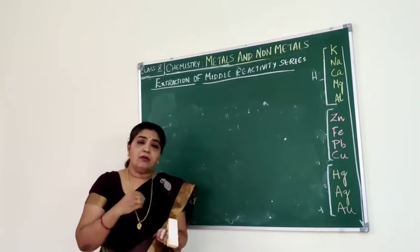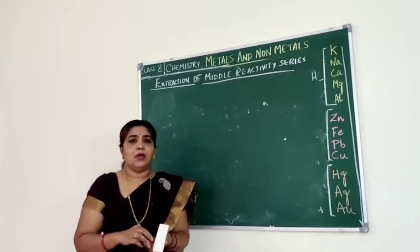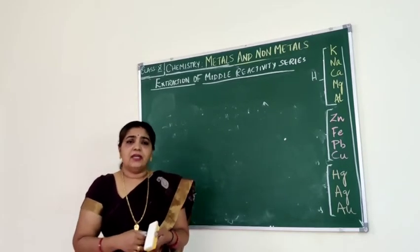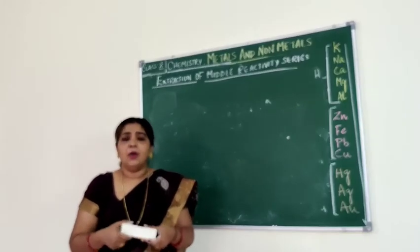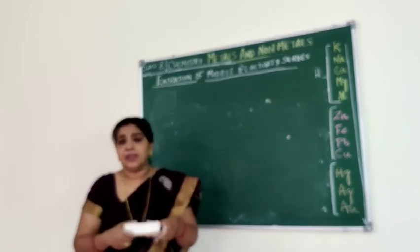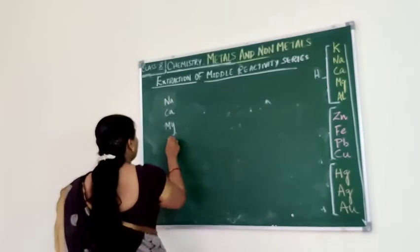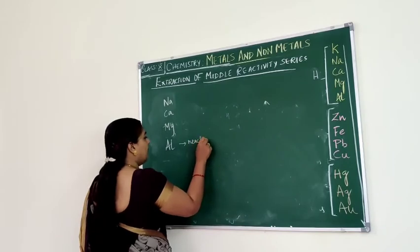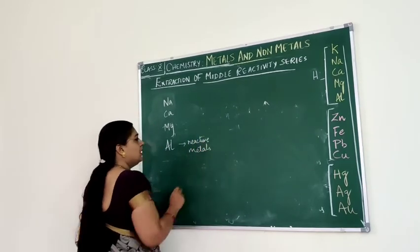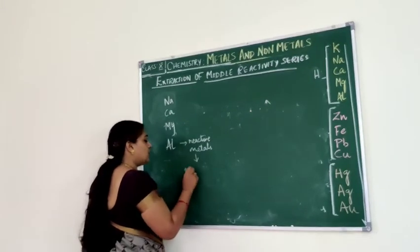Now, is carbon always used as the reducing agent? No, carbon need not always be used. Besides carbon, metals from the high reactivity series can also be used as reducing agents — for example, sodium, calcium, magnesium, and aluminium. These are highly reactive metals and can displace metals of lower activity from their compounds.